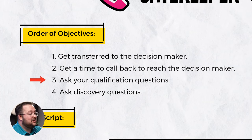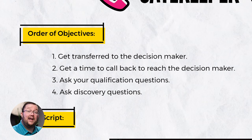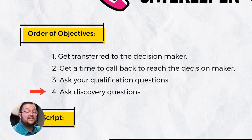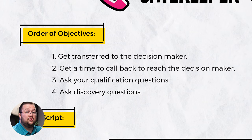Number three: ask your qualification questions. If you've gotten a time to call back, ask some qualification questions so you know whether this person is going to qualify, or at the very least you get some more context that might help your next conversation. The fourth objective is asking discovery questions. This is going to depend on whether the gatekeeper you're talking to has some knowledge of the business — it might be an office manager if you're calling a small business, but if you're calling a larger organization and it's just a phone operator, they're not going to know answers to your discovery questions.